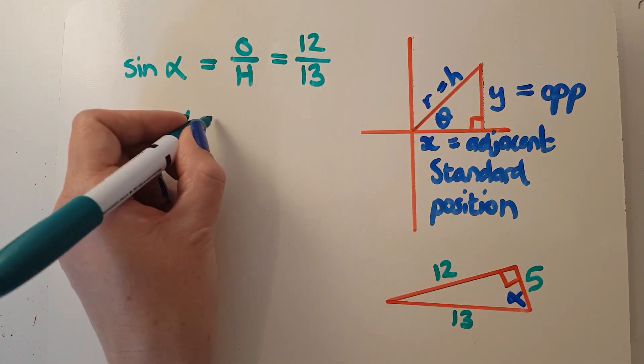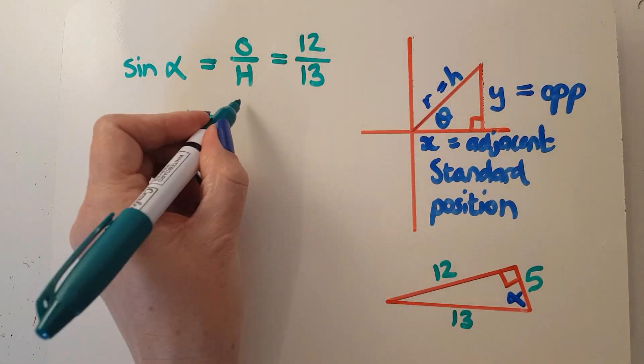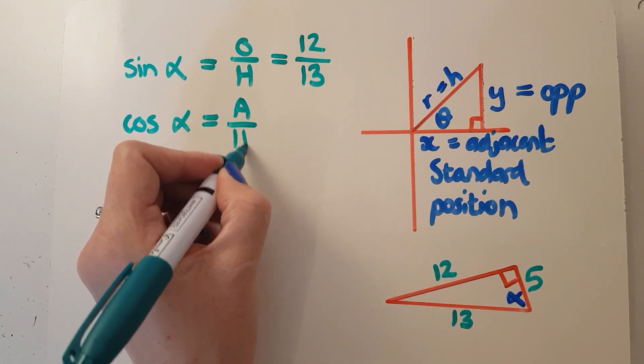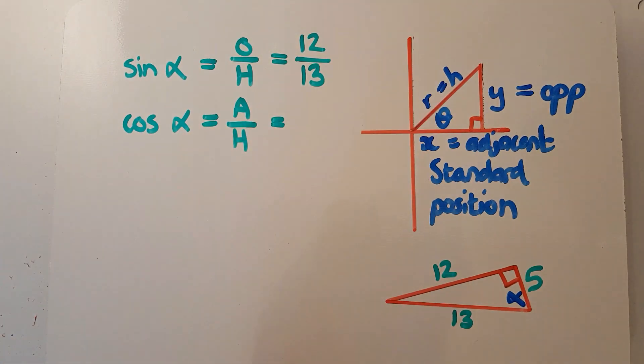My cos of alpha, oh hell, another hour, so it's adjacent over hypotenuse. Now, which of the sides is adjacent to alpha? It's got to be the one just next to. So it is that 5 over there. And the hypotenuse is the hypotenuse, so that's alright.